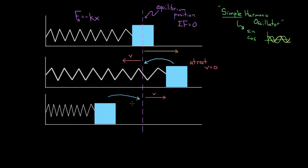Knowing this story lets you say important things about the oscillation. At the endpoints — the points of maximum compression or extension — the speed is zero, because that's where the spring has stopped the mass and started bringing it back. Whereas at the equilibrium position in the middle, you get the most speed, because the spring has brought the mass back to equilibrium with the greatest velocity.